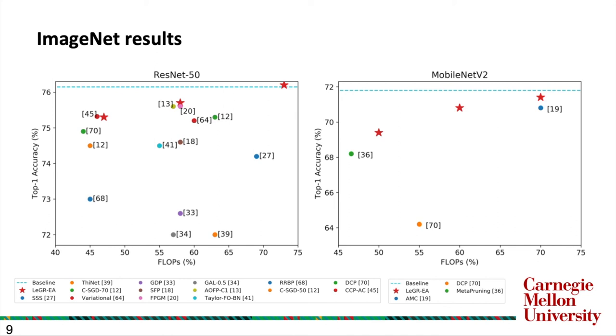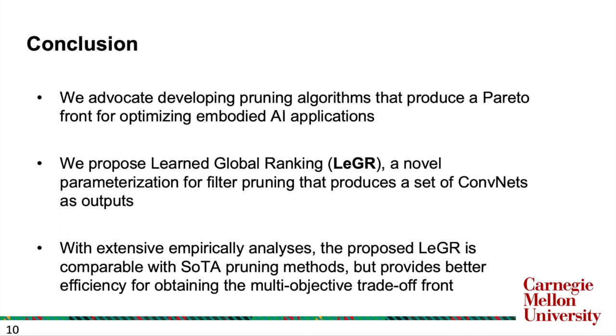In conclusion, we advocate developing filter pruning algorithms that produce a Pareto front for optimizing embodied AI applications. Second, we propose Learned Global Ranking, a novel parameterization for filter pruning that produces a set of pruned networks as outputs. Third, with extensive empirical analysis, the proposed Ledger is comparable with state-of-the-art filter pruning methods, but provides better efficiency for obtaining the multi-objective trade-off front. Thank you for listening.